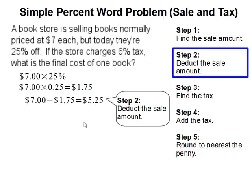Step two: deduct the sale amount. The sale amount is then deducted from the original price — $7 minus $1.75. That gets us $5.25.